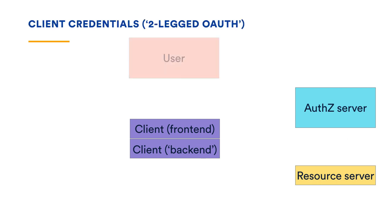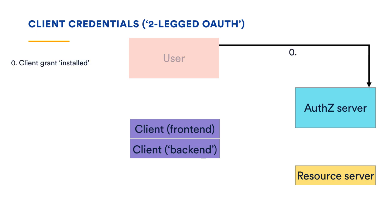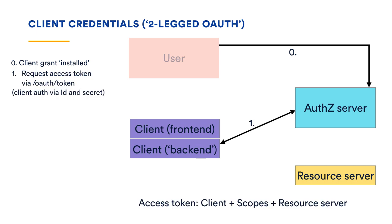So let's talk through the client credentials flow as a first step. Here, there's no real user interaction because the client is working on its own behalf. All the user does initially is install or set up the initial grants by some out-of-band mechanism, like a chatbot installation. But once that happens, the client backend uses its ID and secrets to get an access token from the authorization server, and it then uses that token to access the resource server.